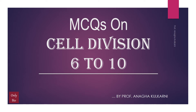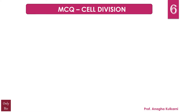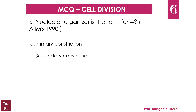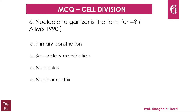Question number 6: the nucleolar organizer is the term for — A) primary constriction, B) secondary constriction, C) nucleolus, D) nuclear matrix. The correct answer for this question is B) secondary constriction.